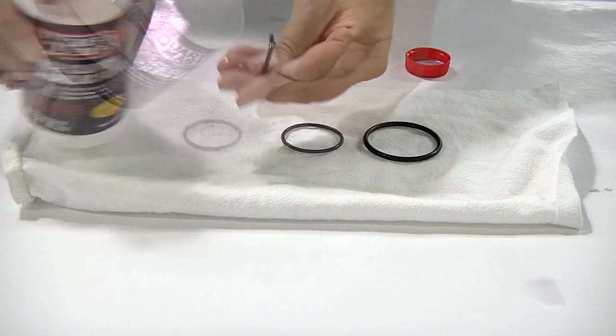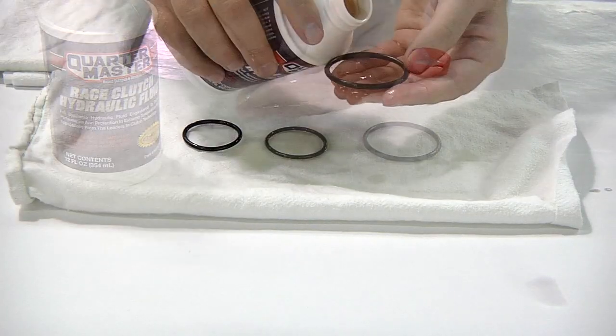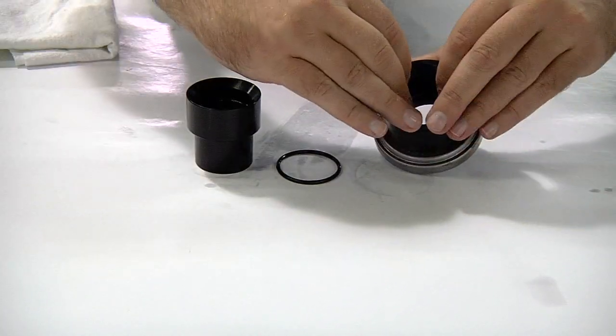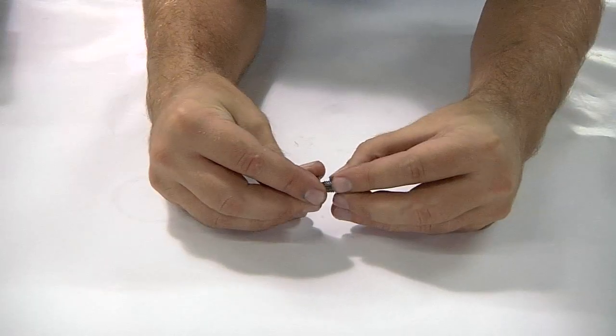Once you are ready to reassemble, lubricate all new seals. Install new seals on the piston, bearing body, and AN fittings.